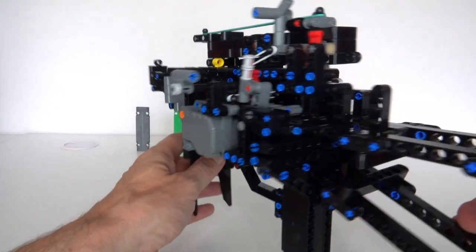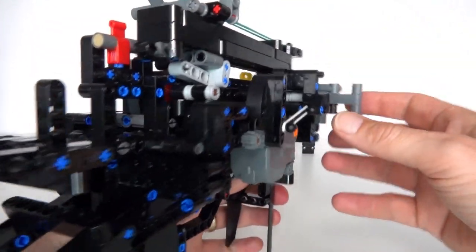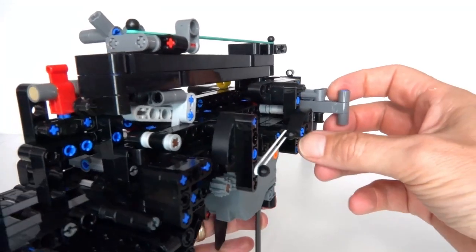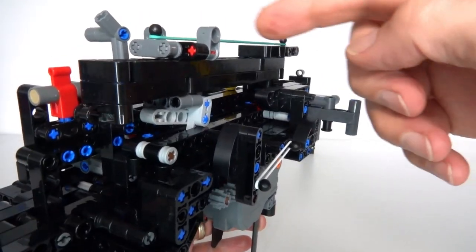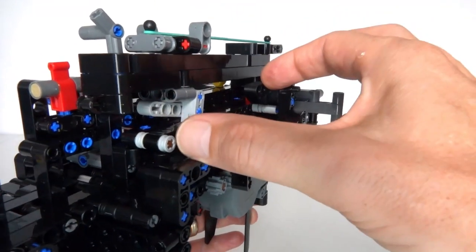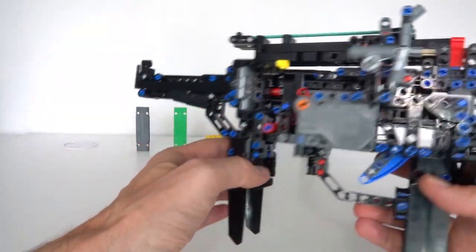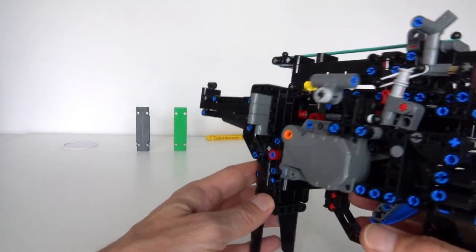So the bullets are reloaded by using the reload lever over here. That will reload and put a new bullet into the firing chamber. You can see how this part moved forward and it's holding the bullets in the magazine down here. So now the gun is all ready to fire again.